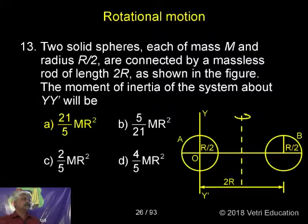Two solid spheres, each of mass M and radius R/2, are connected by a massless rod of length 2R. As shown in the figure, the moment of inertia of the system about YY' will be.